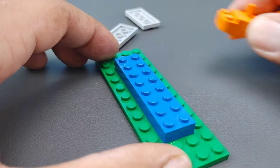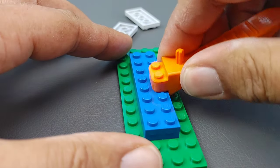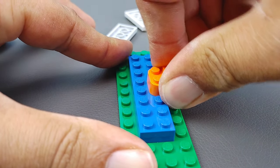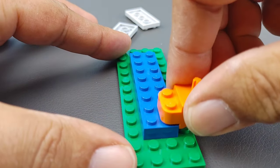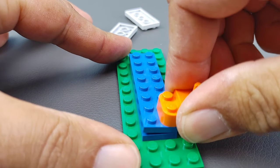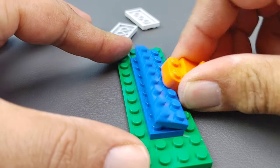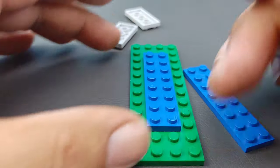What you're going to do if you have something that's really long like this and it's stuck really hard, see it doesn't want to come right away, so what you do is you start at one end and you just slowly work your way down and look at that, it pops right apart.